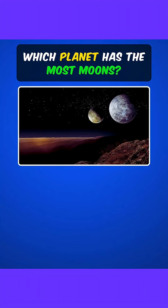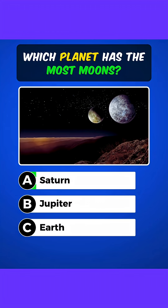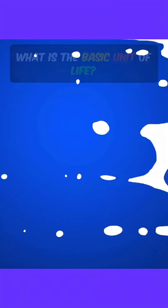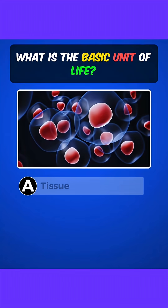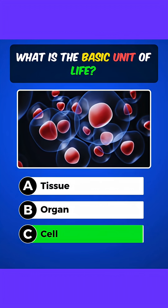Which planet has the most moons? Answer A: Saturn. What is the basic unit of life? Answer C: Cell.